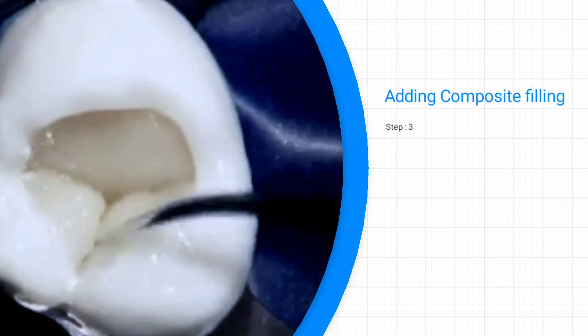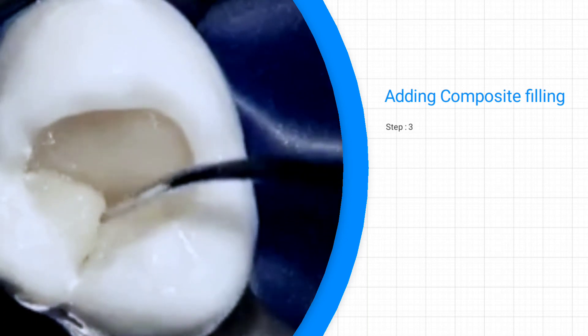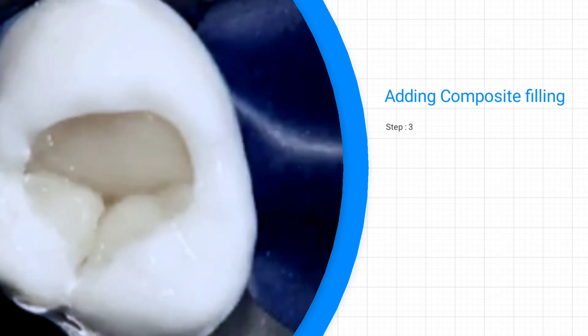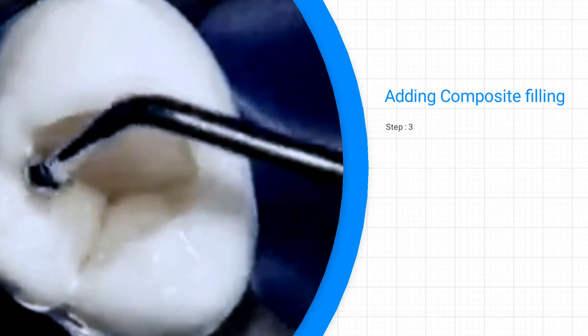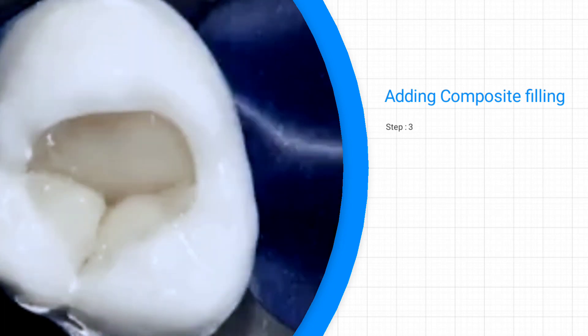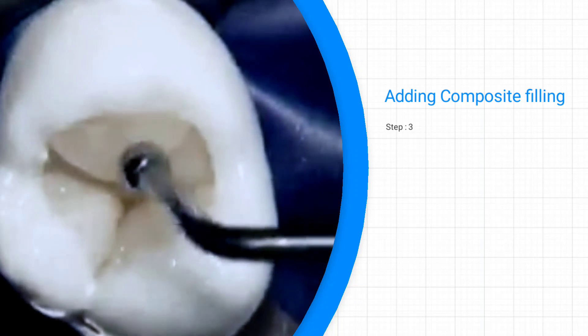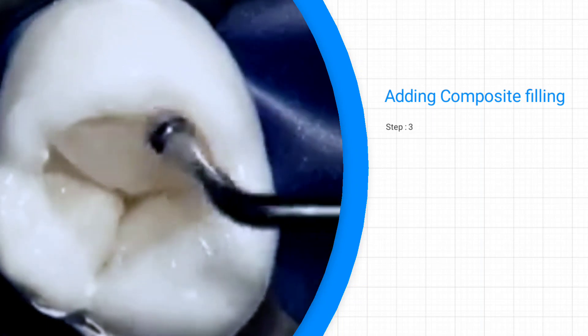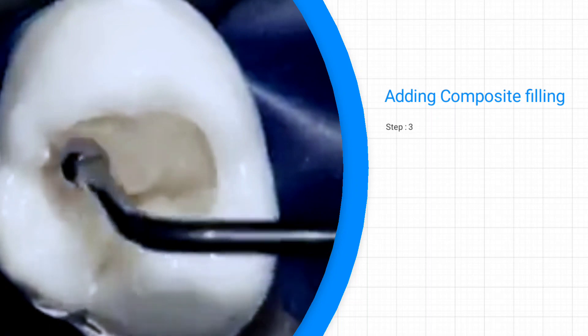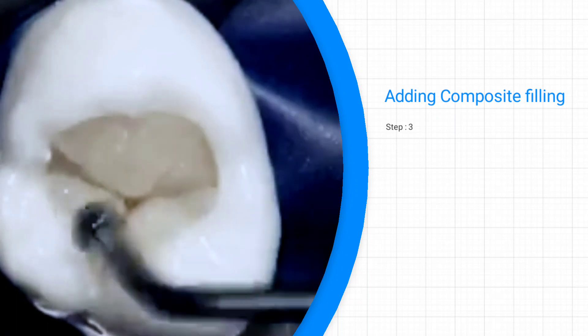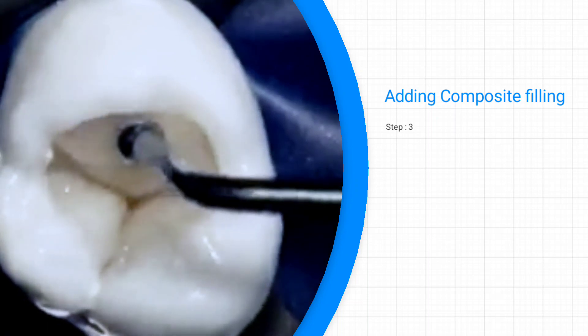Since moisture control is so important during this step, you need to make sure that the patient stays with a wide open mouth so that the tooth remains dry during the whole process. That's the reason we use rubber dam, and rubber dam is so important for a composite restoration.